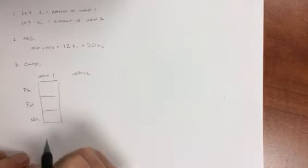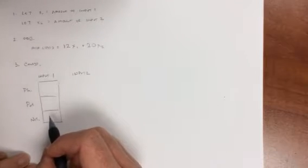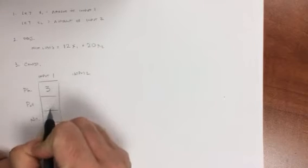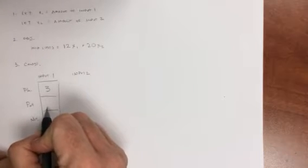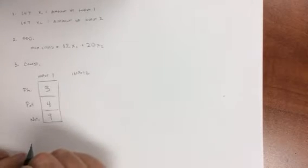and nitrates. Well, input one, as the problem says, provides three units of phosphates, four units of potash, and nine units of nitrate.